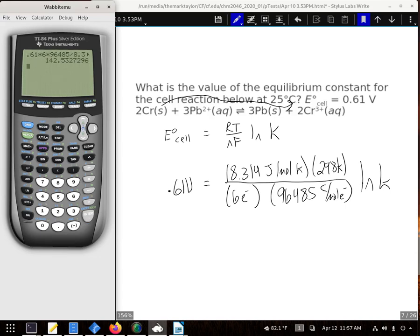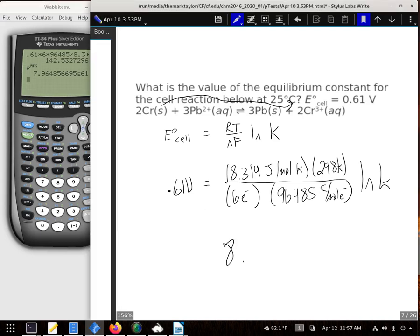We need to see that that is equal to the natural log of K. So we're going to do the inverse natural log of that answer to get our K. So that's about 8.0 times 10 to the 61st.